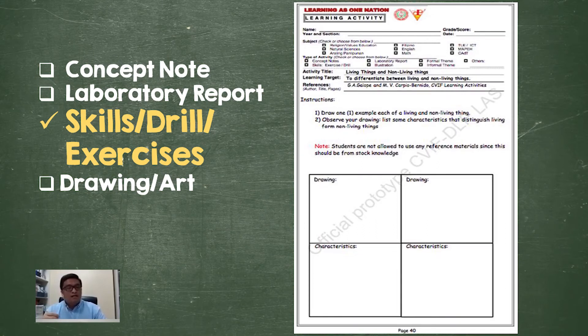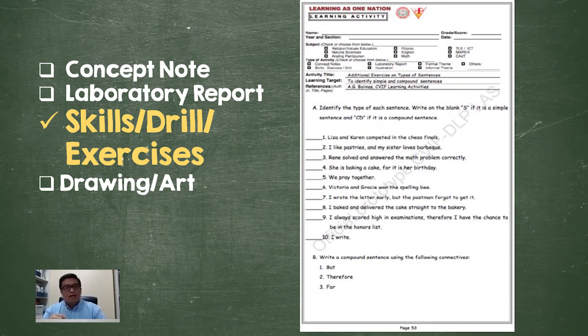Aside from this example, we also have an example for English wherein we can check if the student already understands the lesson about types of sentences. In this example, notice that we didn't have the concept digest or the concept notes, but we proceeded immediately with the exercise questions.